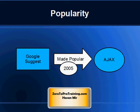Ajax was made popular by Google Suggest in 2005. The Google Suggest application uses Ajax to create a very dynamic web interface. When you start typing in the search box, a JavaScript sends your typed characters to a server, and the server returns a list of suggestions displayed on screen while you are typing.